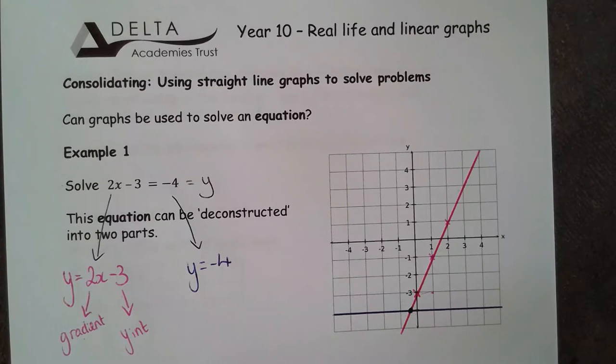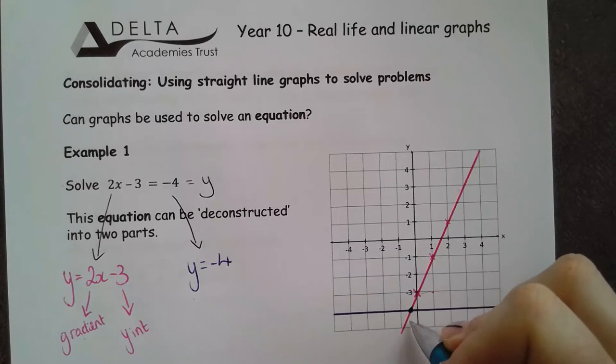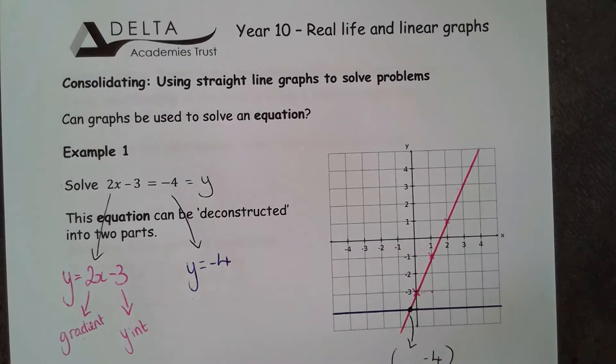Now it should have been relatively straightforward just from what we can see here to figure out that y in this coordinate should be negative 4, because I'm on that line where y is negative 4.